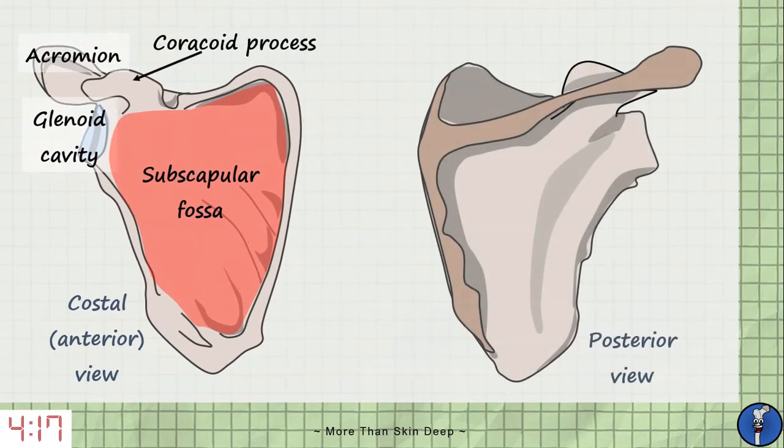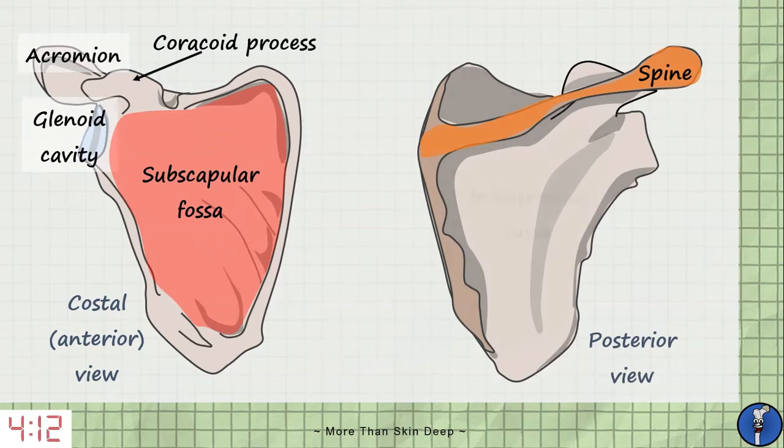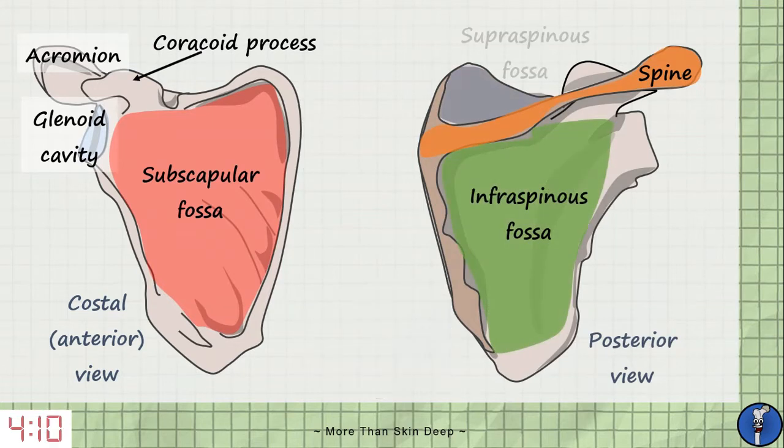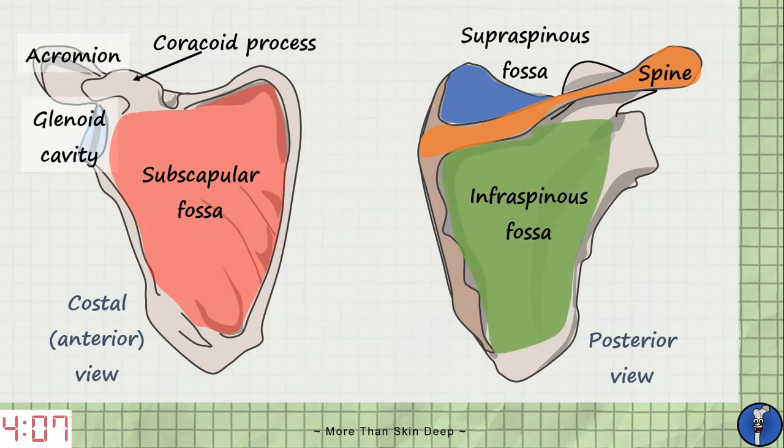From the posterior view we have a prominent spine which divides the scapula into two parts. The infraspinous fossa below the spine and the supraspinous fossa above it.